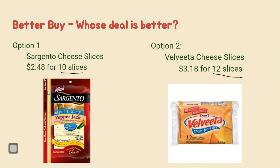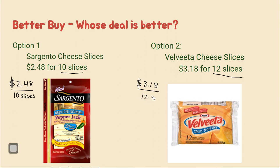When we're comparing unit rate of different items like food, we're trying to figure out the cheapest option. Money is always going to go on the top of your rate, because that's what we're going to be dividing by whatever our unit is down here. In this case, it's 10 slices of cheese, because we want to figure out how much does one slice cost so we can compare one slice here to one slice over here. Over here, we'll put the slices on the bottom as well.